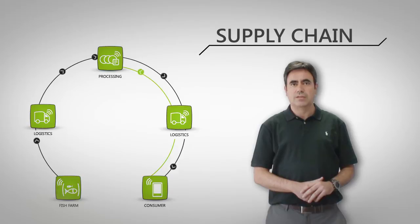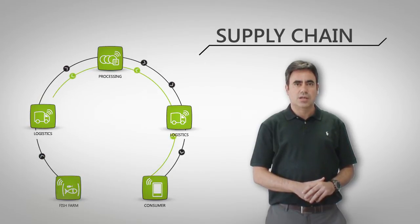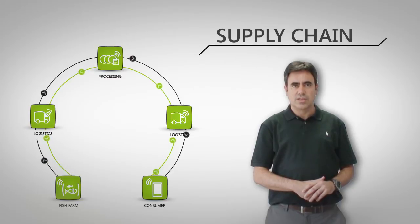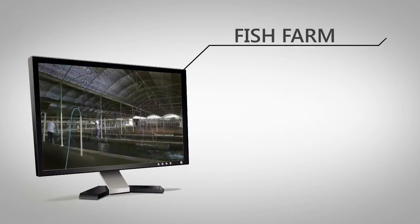The second one is at the processing plant, where the fish is processed. The third one is related to logistics. Finally, the consumer stage intends to present traceability information to customers through the internet. The pilot is focused on three main processes that take place in the farm.